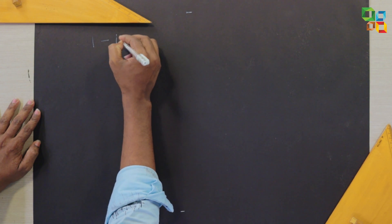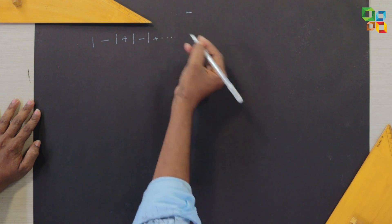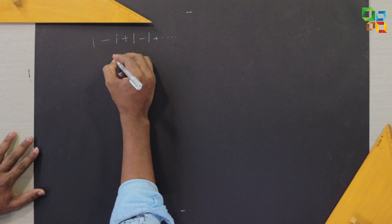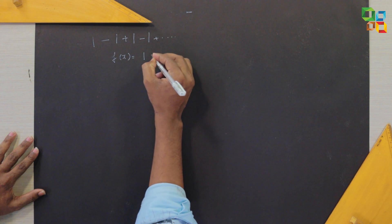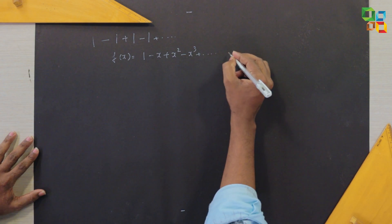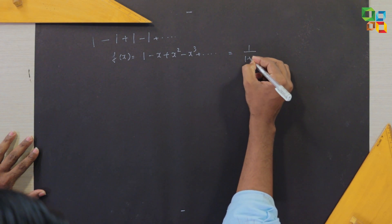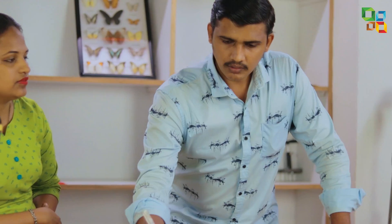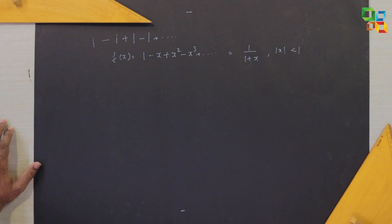Consider the series 1 minus 1 plus 1 minus 1 dash dash dash. This series is divergent. But in physics, in many places, we see this particular series equals one half. What exactly is the meaning of this? I will take f of x to be equal to 1 minus x plus x square minus x cube plus dash dash, which equals 1 by (1 plus x) for modulus of x less than 1. For modulus of x less than 1, this particular series is well defined.